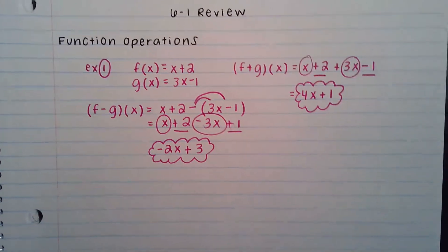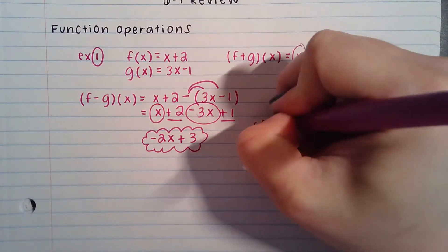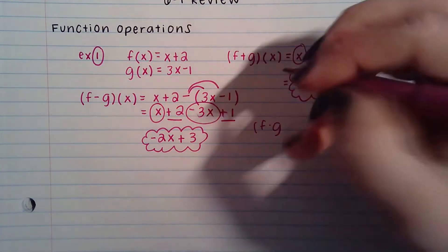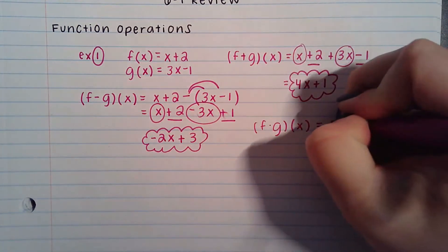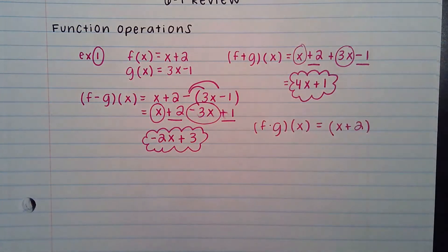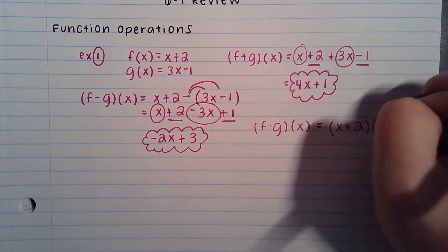Okay, now we'll go to multiplication. When you're multiplying, it'll have the little multiplication dot. Don't confuse this with composition of functions. It's just a closed in dot. Multiplication, you will have to FOIL because you are doing the entire f function, which in this case is x plus 2, times the entire g function, which is 3x minus 1.